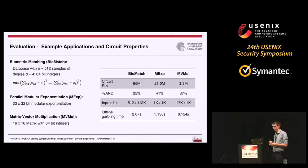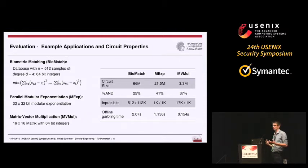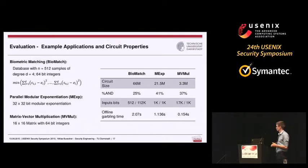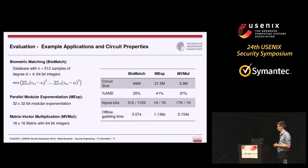Here are some example applications we compiled for evaluation. The first is biometric matching. Another is modular exponentiation, used for blind RSA. We also have matrix-vector multiplication. The biomatch application has the largest circuit and highest input complexity, while matrix-vector multiplication has a small circuit size, and modular exponentiation has very low input complexity — differences that will influence our results.